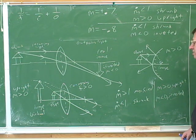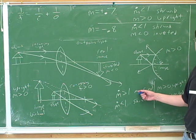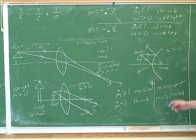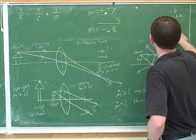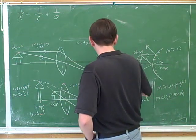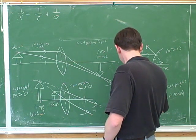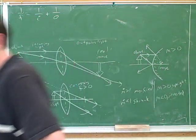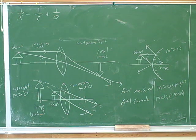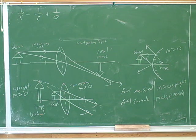As a memory aid, magnitude has the same first four letters as magnified — so the magnitude of m tells you about magnification, and the sign tells you upright or inverted. Looking at the handout, we've now gone over the magnification conventions: upright is positive, inverted is negative. The magnitude less than one means shrunk, and magnitude bigger than one means magnified.